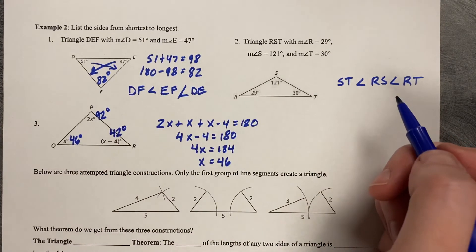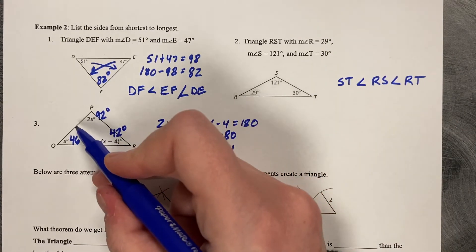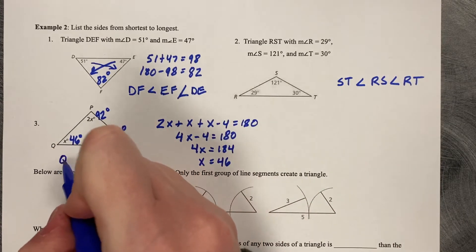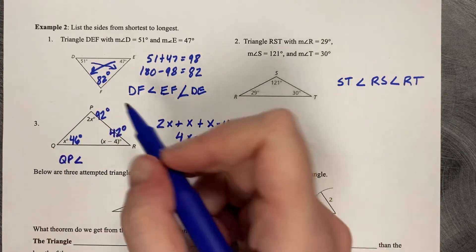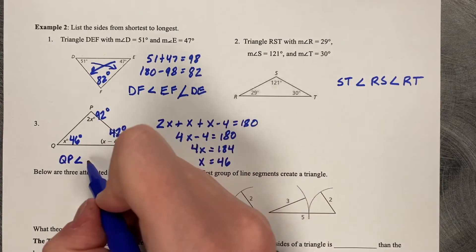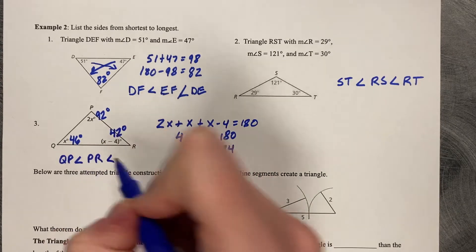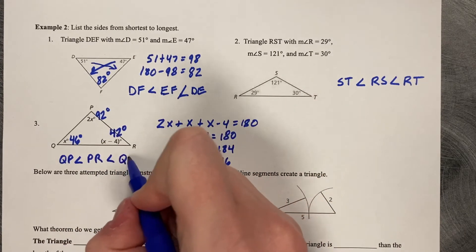So then we go from smallest to largest. So 42 is smallest. So that's going to be QP is less than PR is less than QR.